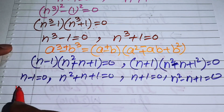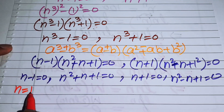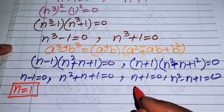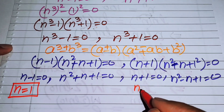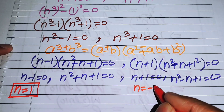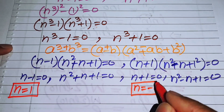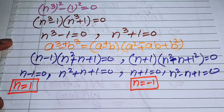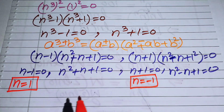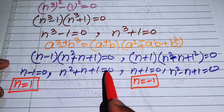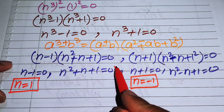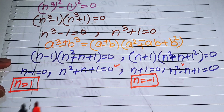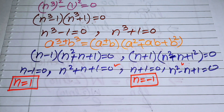From the first sub-equation we easily get n equals 1, and from the third sub-equation we get n equals minus 1. These are the first two real roots of this problem. Now we have the two quadratic equations remaining to solve.